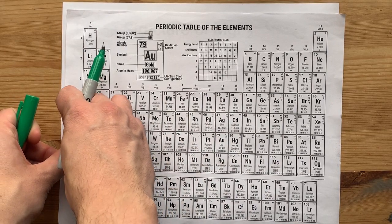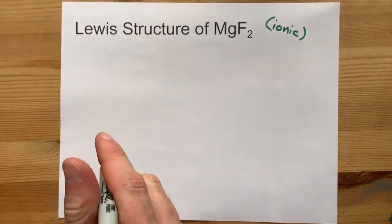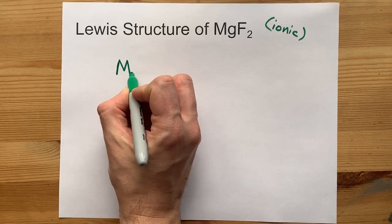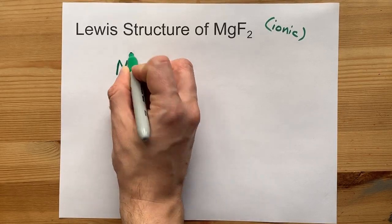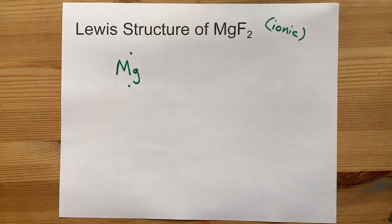Magnesium is in group 2, so it brings 2 valence electrons with it. There's my Mg, 1, 2 valence electrons. Great.